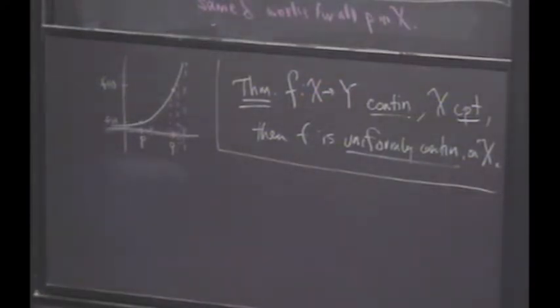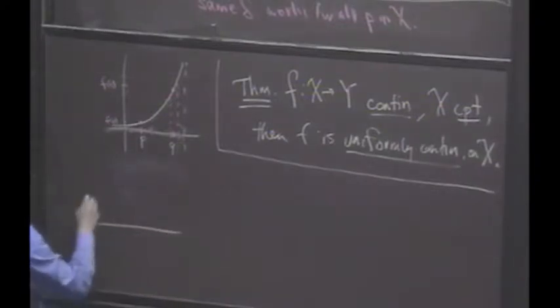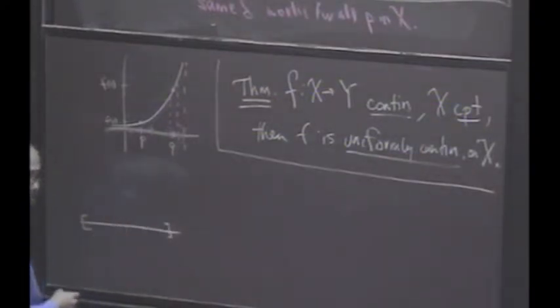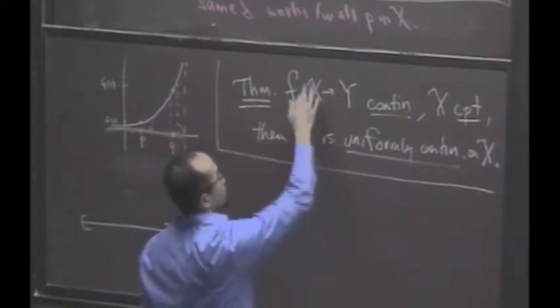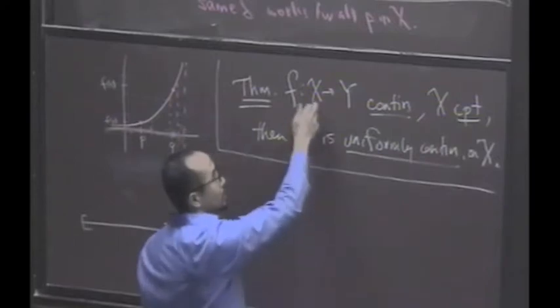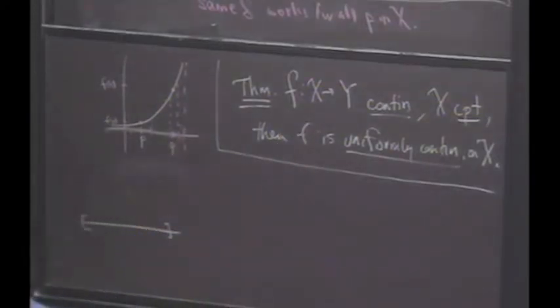So how is compactness going to help me here? Any ideas? Let's draw another picture here. And let's imagine that we have a compact set. Although I want you to realize, X didn't have to be just a subset of the real line. It could be a subset of any metric space, right? It could be two-dimensional, three-dimensional, infinite-dimensional, it doesn't matter.